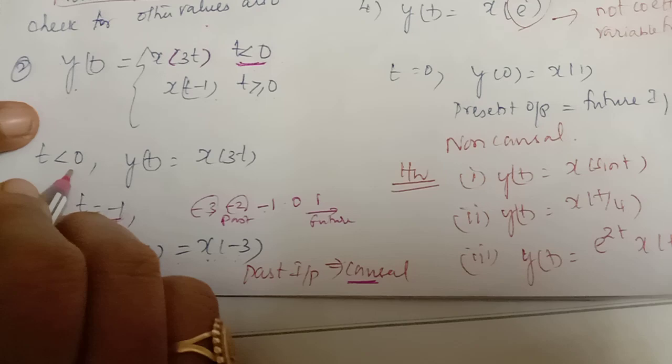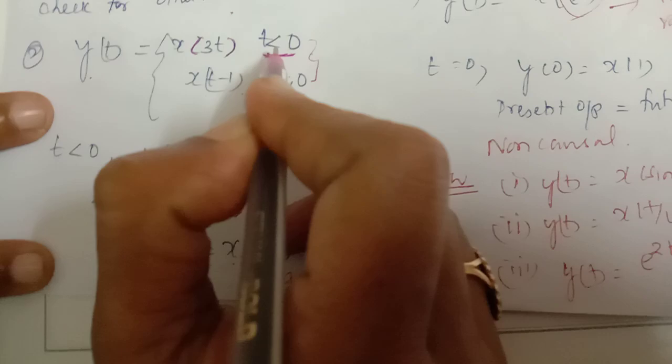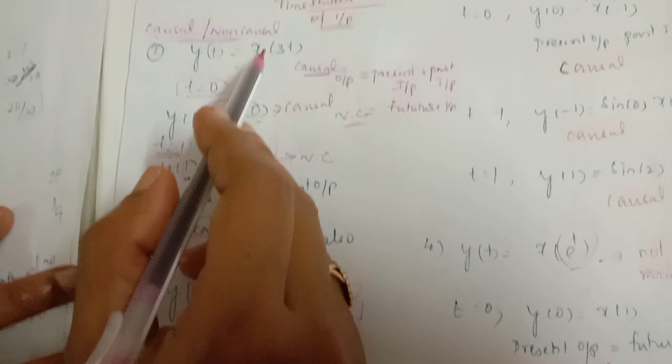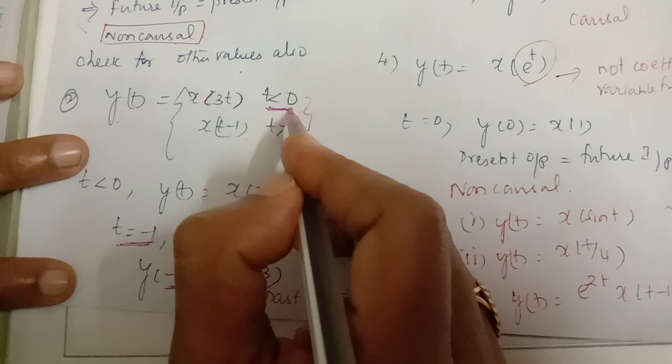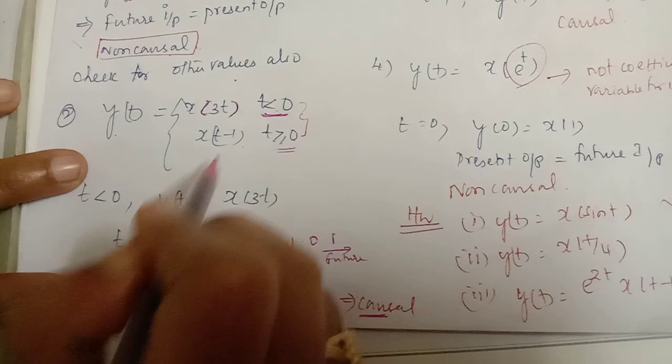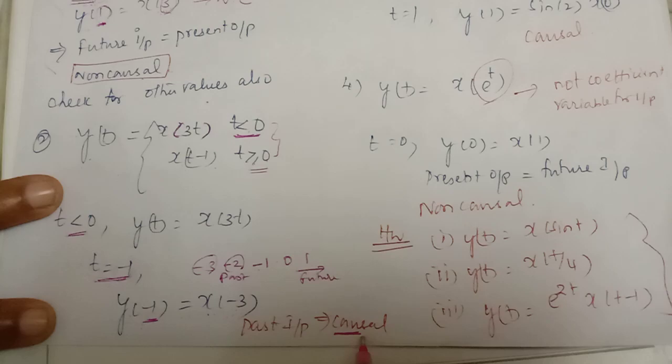Similarly, we check for t ≥ 0. For this problem, the limits of t are given, so we check causality within each defined interval. We have verified the system to be causal for t < 0, since the output depends only on past input values. We call the system causal for this duration.